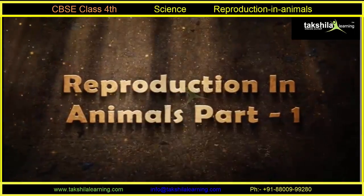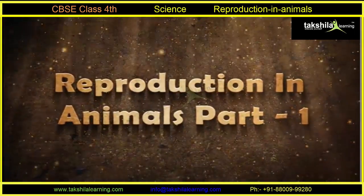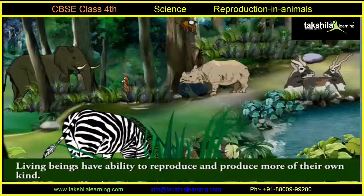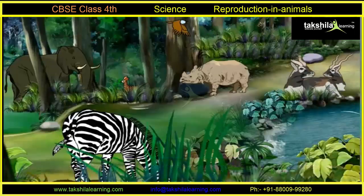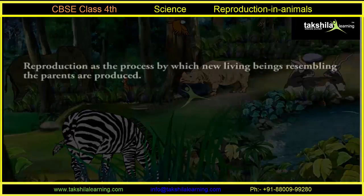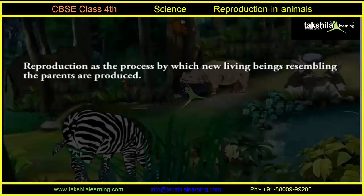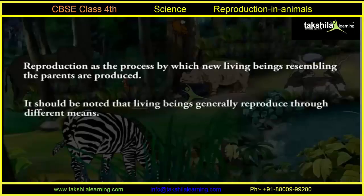Reproduction in Animals Part 1. Living beings have the ability to reproduce and produce more of their own kind. This process is called reproduction. Hence, we can define reproduction as the process by which new living beings resembling the parents are produced. However, it should be noted that living beings generally reproduce through different means.